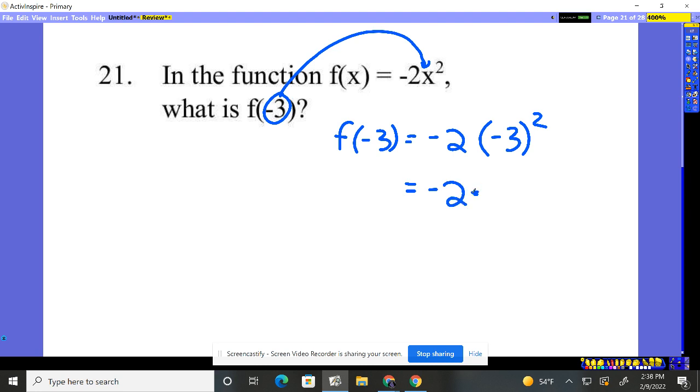So negative two times what's negative three times negative three, positive nine and negative two times positive nine, negative 18.